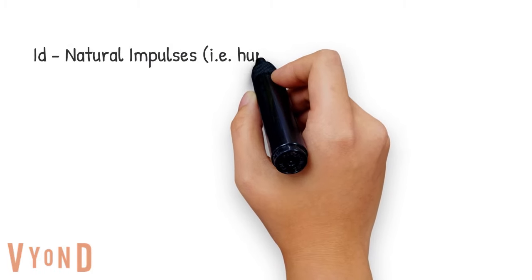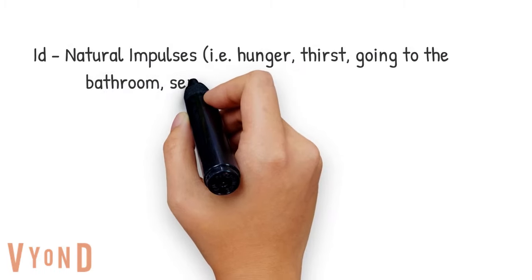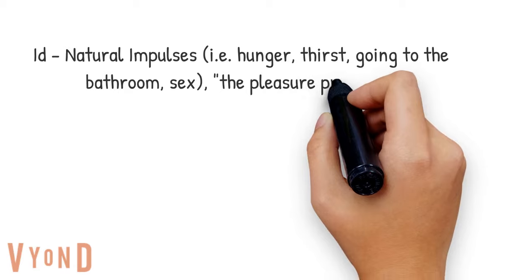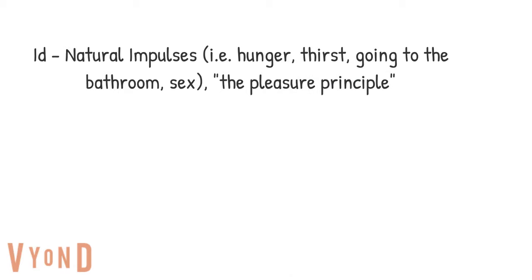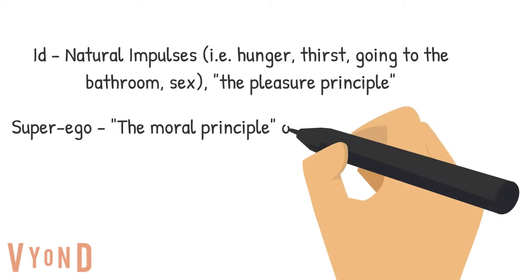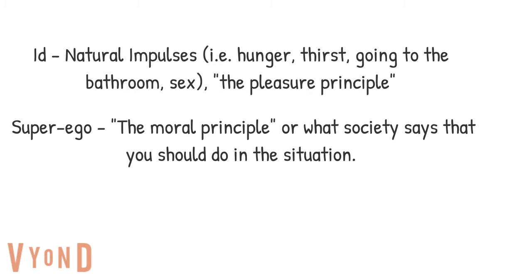The id, or the pleasure principle, is your natural impulses, such as using the bathroom, sex, eating, and thirst. The superego, or the moral principle, is to do what society says is right, or what you believe is morally right, given the situation.